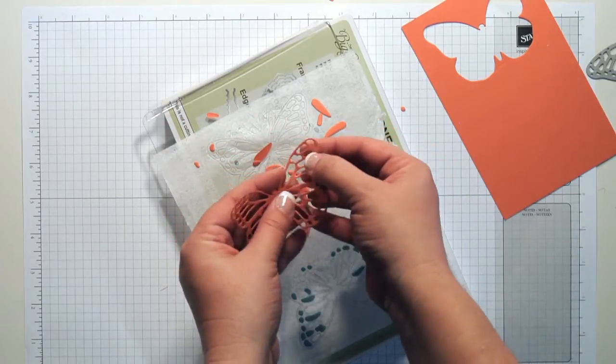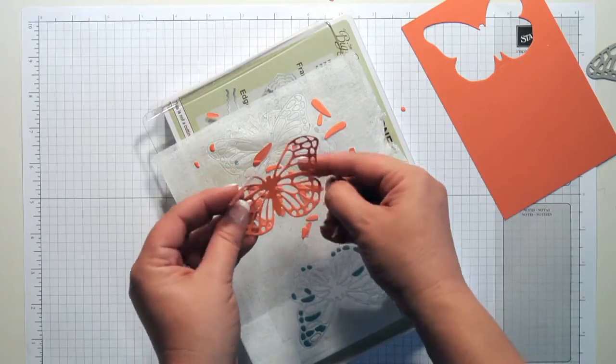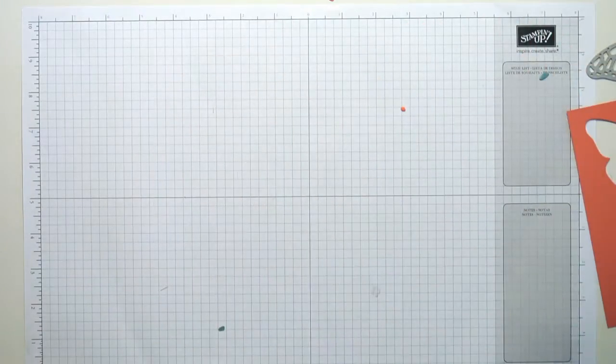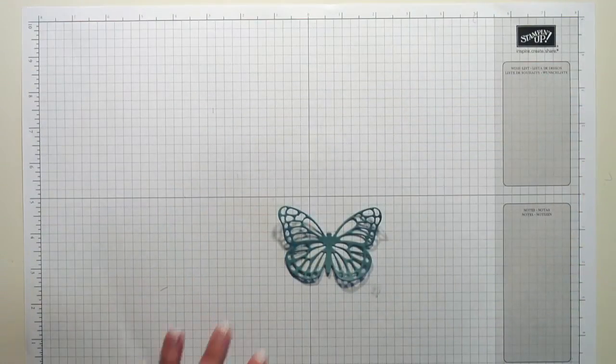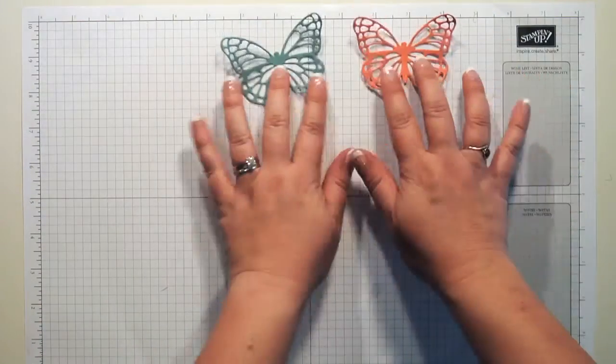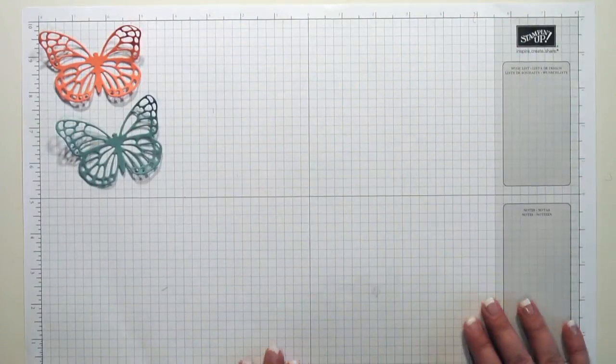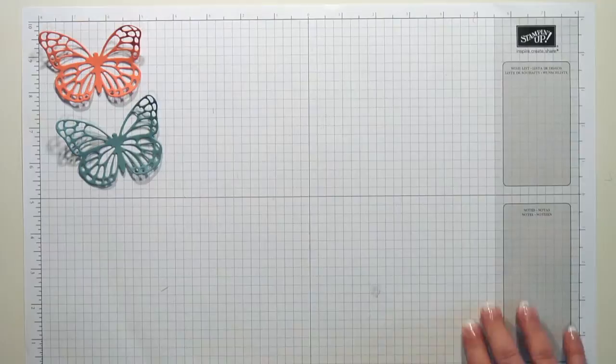And all those pieces just kind of fall out, make it really nice. Okay, so there's our two butterflies. I just love those, they're just so pretty. So let's make the card, shall we?